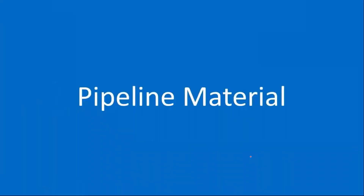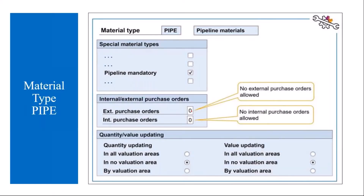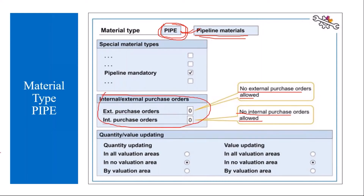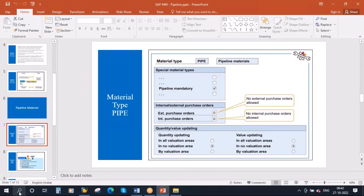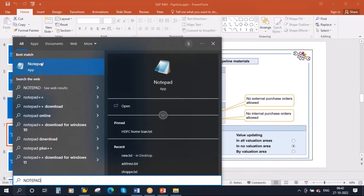We need to see how to execute this in the system. We will start with pipeline material creation. To have the pipeline process, standard SAP has provided a material type called PIPE — there is a material type available called pipeline material. For materials created with this material type, you cannot create a purchase order — you cannot create an external purchase order or even an internal purchase order. That is the main characteristic of material type PIPE.